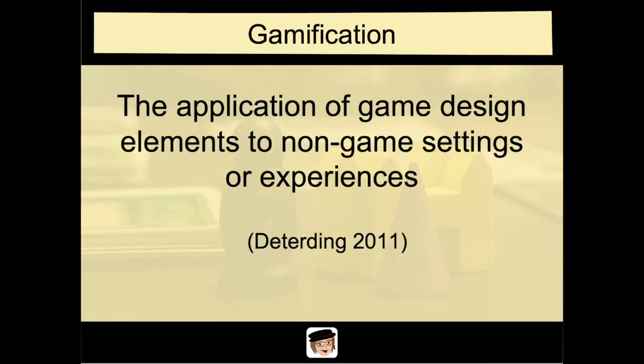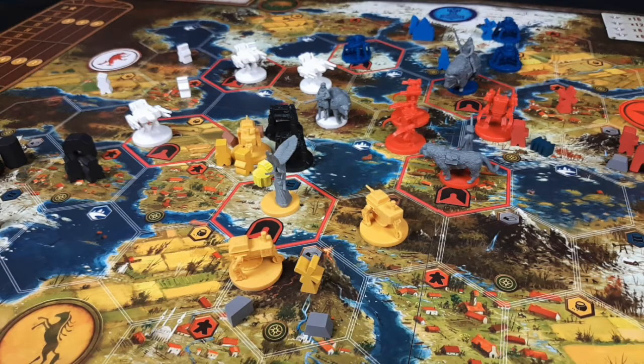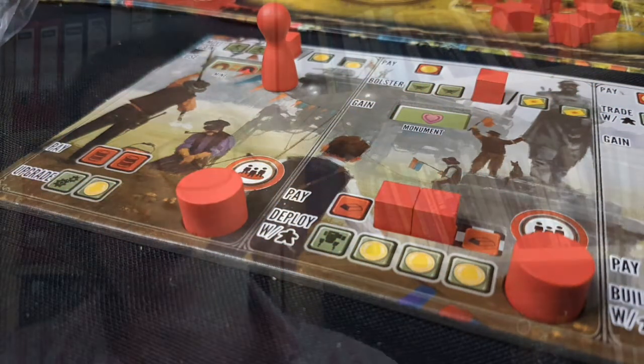Gamification is defined by Deterding as the application of game design elements to non-game settings or experiences. Now, often these game design elements are something that we would refer to in game design as mechanics or dynamics. Different mechanics offer players ways of interacting or acting inside a game, and they're often visualised using a range of components including images, icons, and little board pieces such as you can see here. There may be multiple boards and, to help the player, there are sometimes specific pieces to help them keep track. But perhaps you're expecting something a bit more like snakes and ladders. So the next section of this presentation is going to highlight some common game design elements.